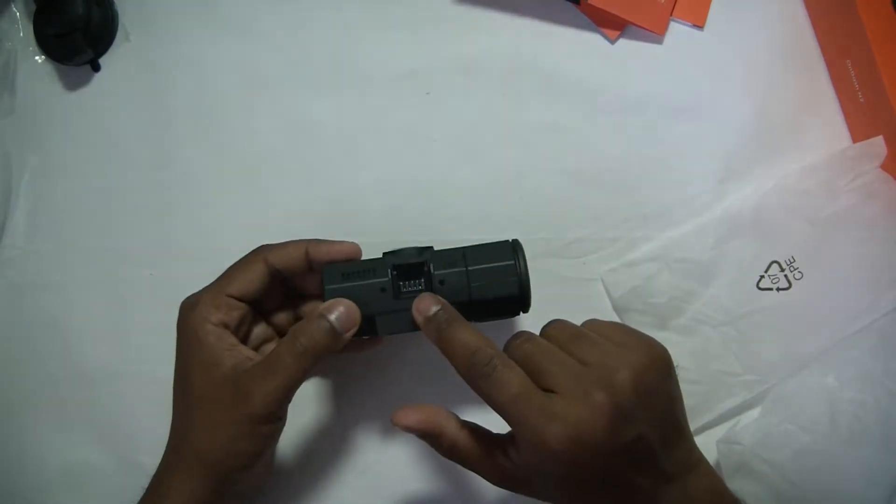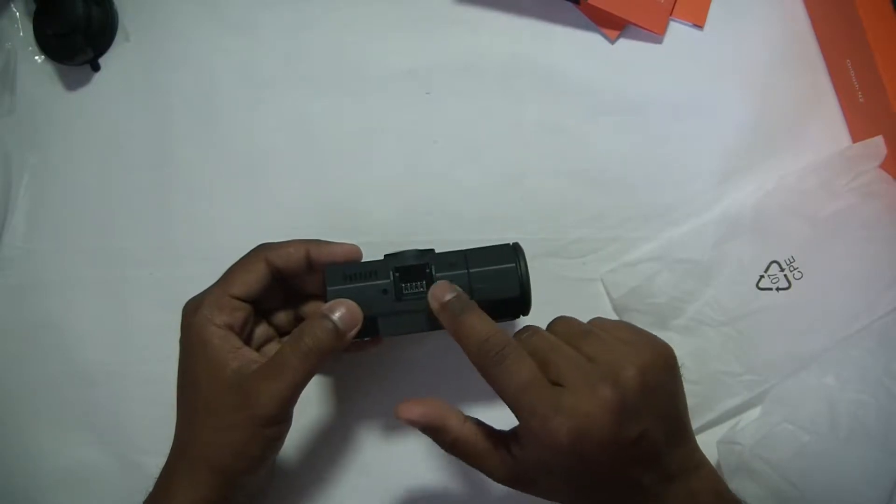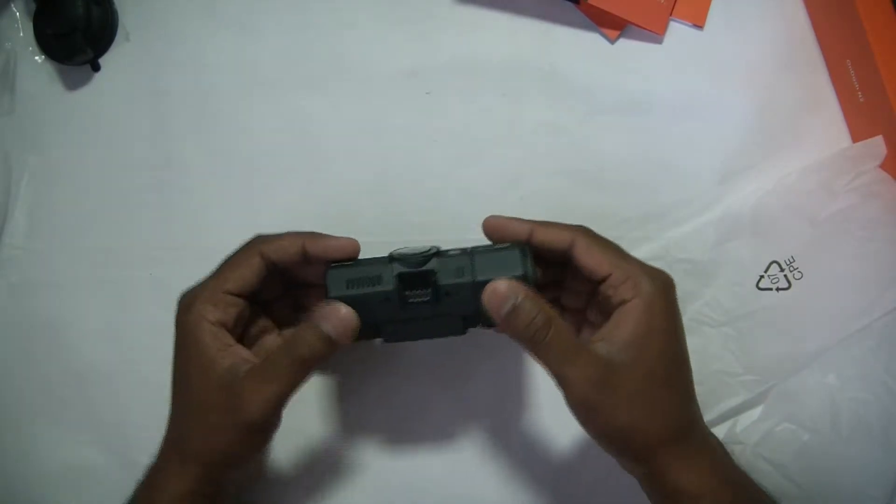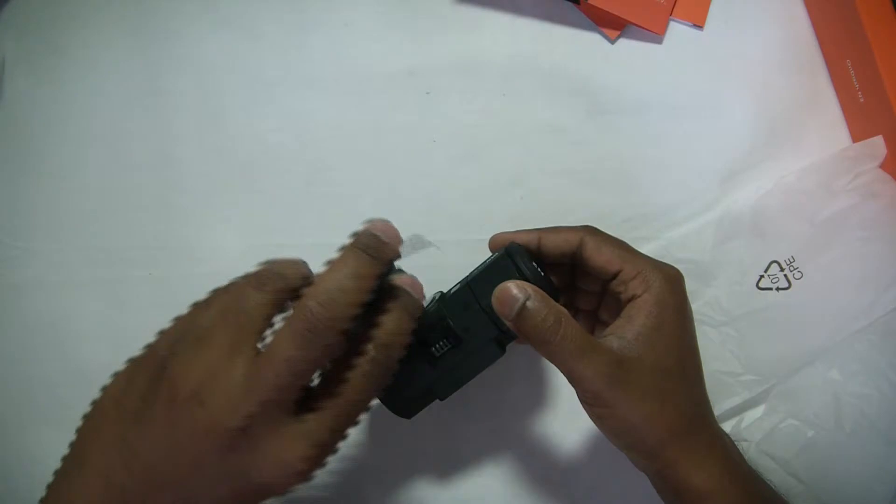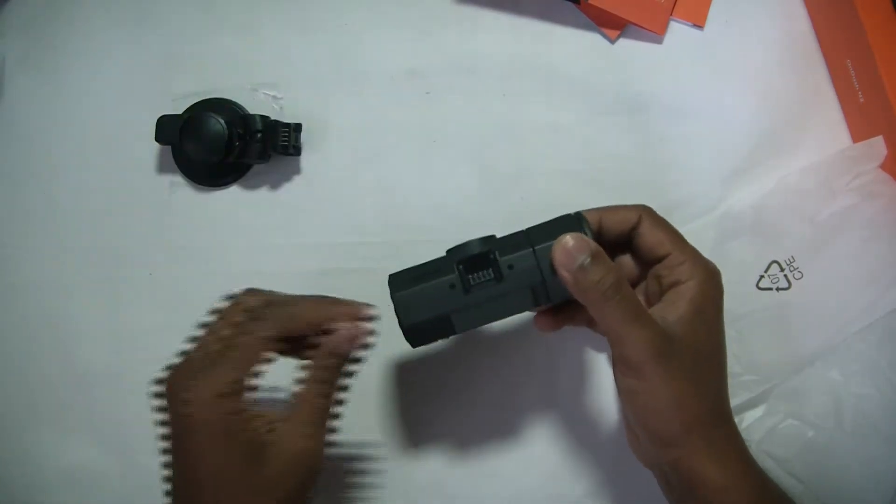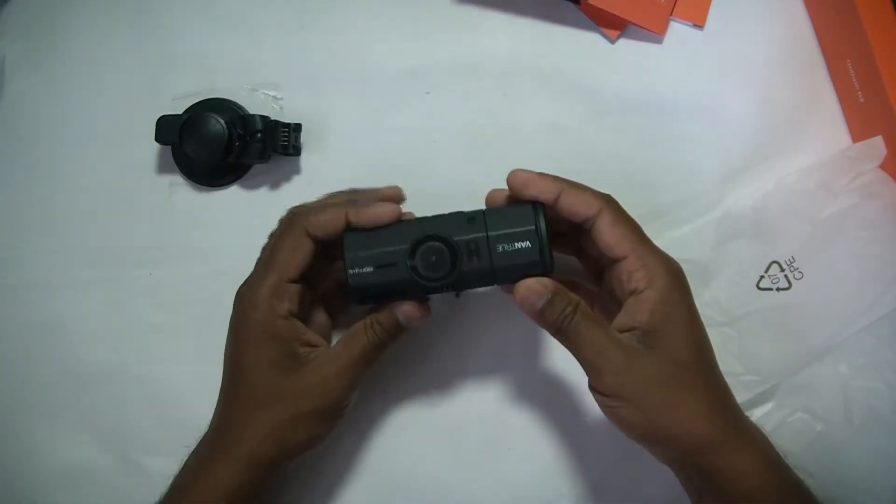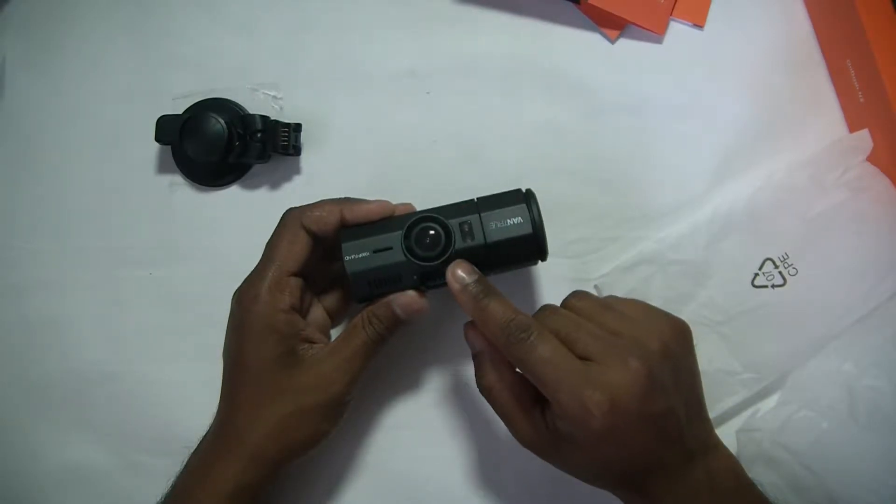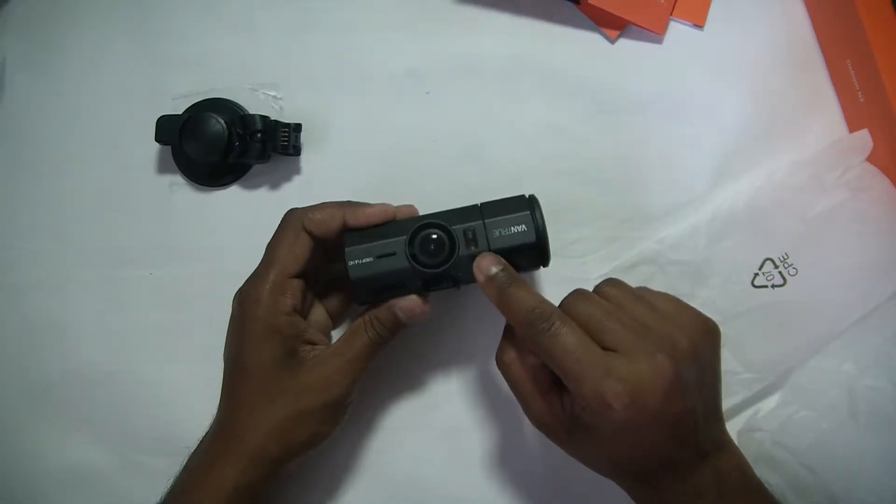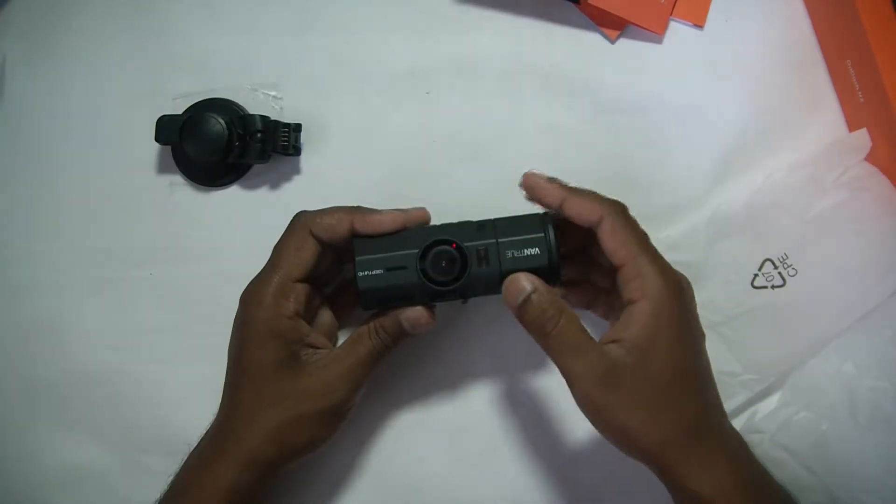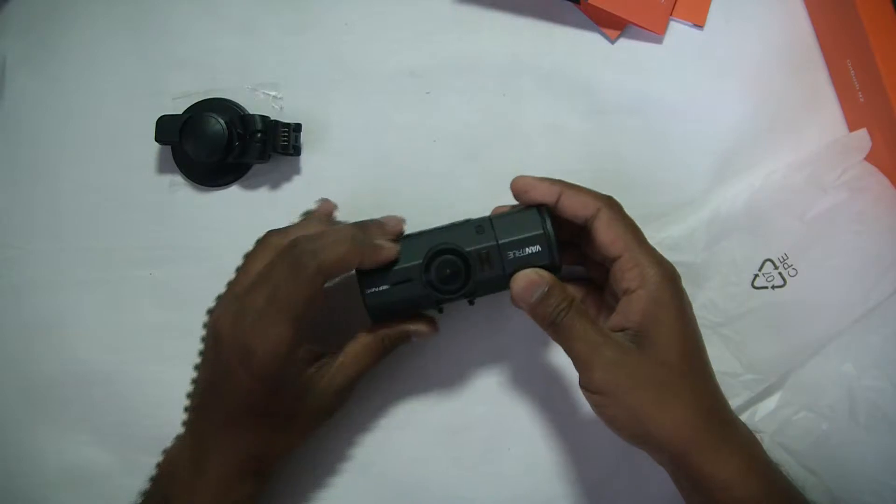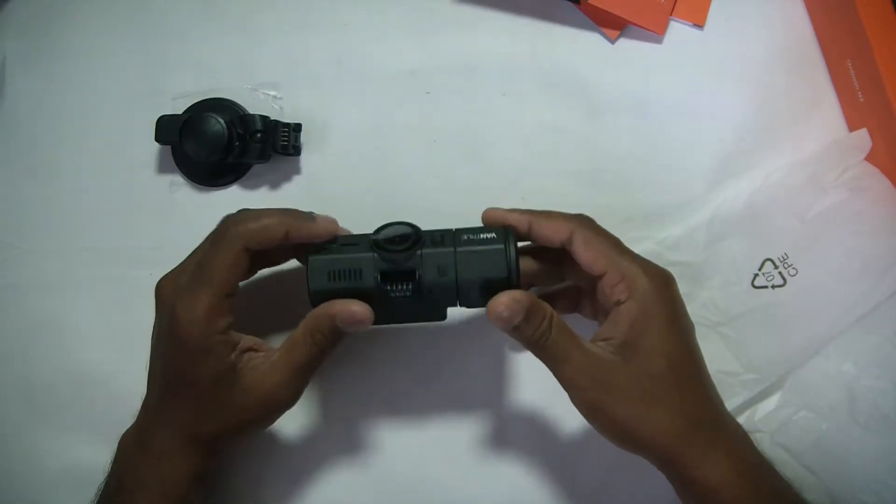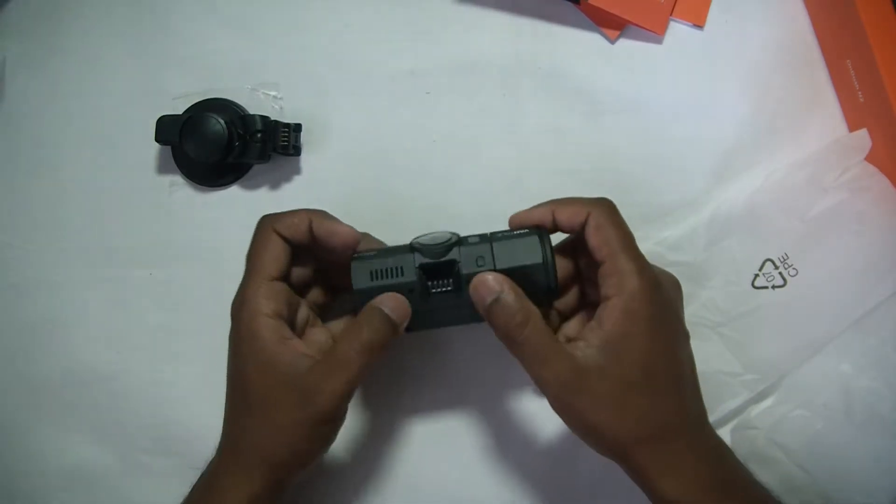Starting off, we have the suction mount connector here which is a nice and neat way to hide the cords coming from the sides. We have the front lens here which is 1080p recording. We have the IR sensor here. We have, I believe this is a speaker.